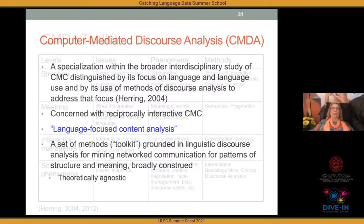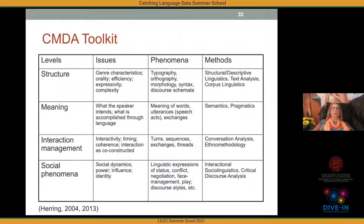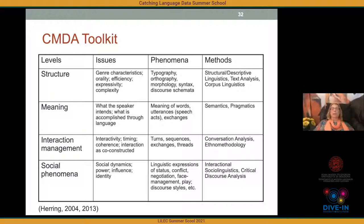Here's an overview summary of the toolkit. What's important to notice are the four levels of analysis from smallest to largest: structure, meaning, interaction management, and social phenomena. I've listed issues one might be interested in studying at each level, relevant phenomena to focus on, and methods from linguistics and other areas that might be useful to employ.